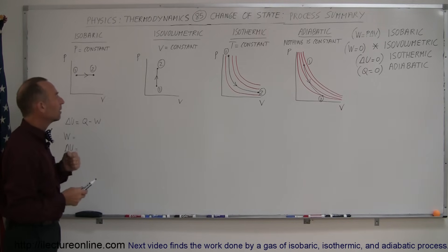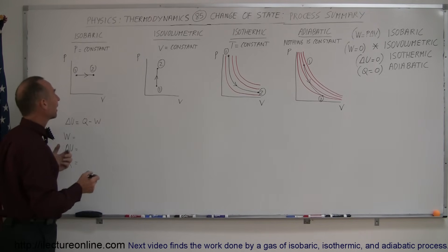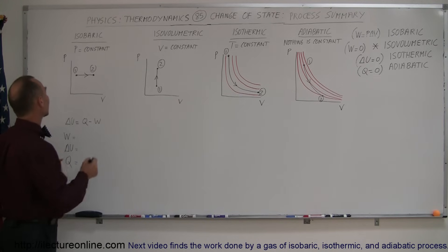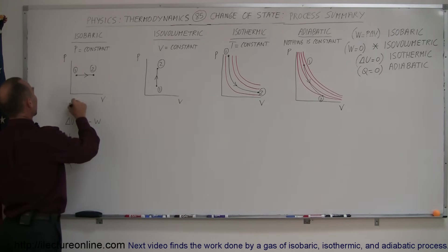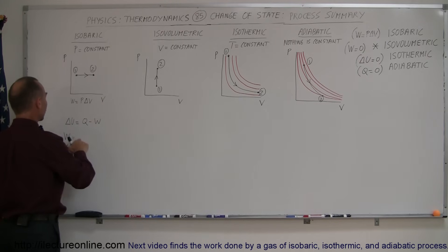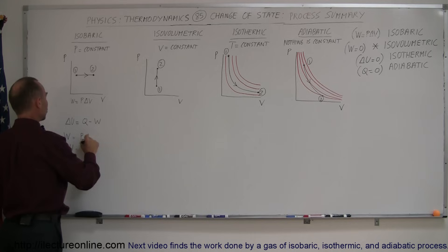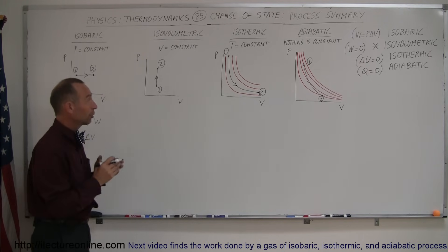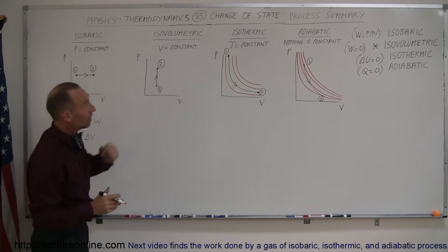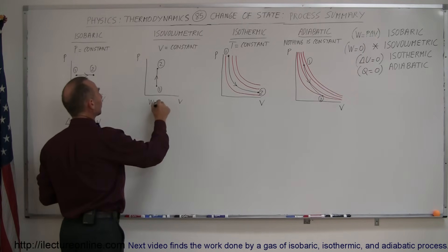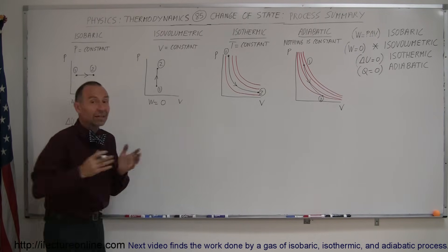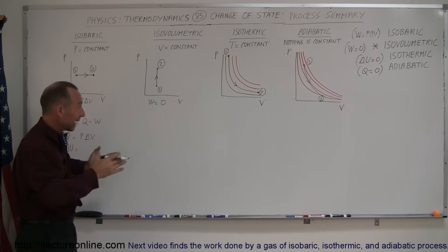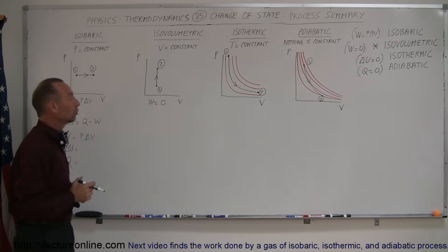The peculiarity about each process is that when pressure is constant, the work done is equal to pressure times the change in volume — W = P ΔV. In the isovolumetric process, the work done is equal to zero, because the gas cannot expand, and a gas can only do work if it expands.